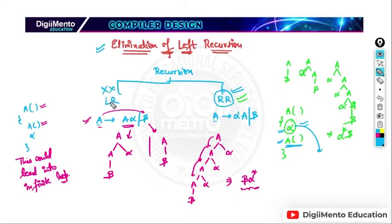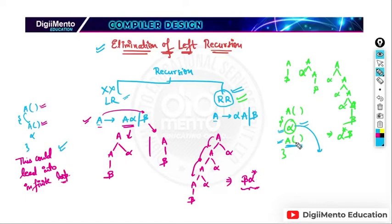We don't want left recursive grammars because left recursion can lead to infinite loops — it will keep calling itself again. But in right recursion, alpha acts as a condition; if satisfied, call recursively, otherwise stop. So we can prevent the function from entering an infinite loop.